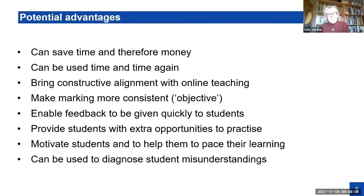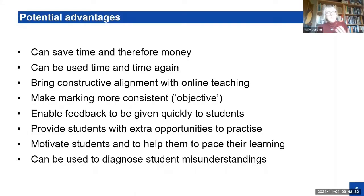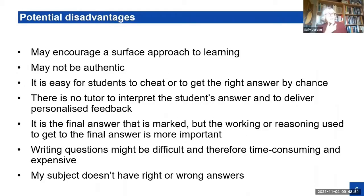They can make marking more consistent. Those old-fashioned pencil-in-the-square questions are called objective tests — the language was used because they were believed to be really consistent. Even when marking more sophisticated things, it's the question setter who's determining the marking, but it's one person — it's not got that variability. Humans are pretty fallible when it comes to marking. We've got the quick practice motivation, and the point I wasn't sure people would get — diagnosing student misunderstandings.